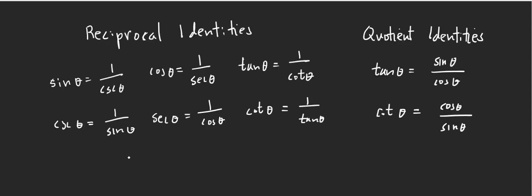Let's take a look at reciprocal identities and quotient identities. Sine theta is 1 over cosecant theta, and cosecant theta is 1 over sine theta, and so forth. For quotient identities, tangent theta is sine theta over cosine theta, and cotangent theta is cosine theta over sine theta.